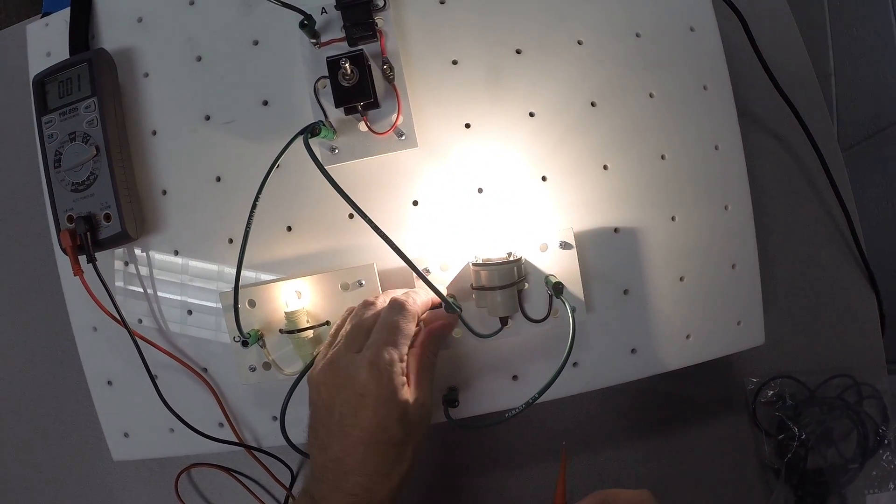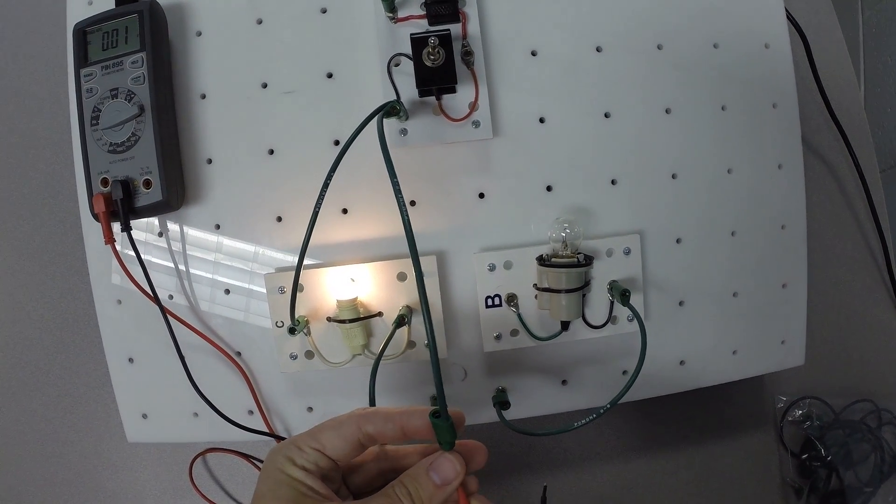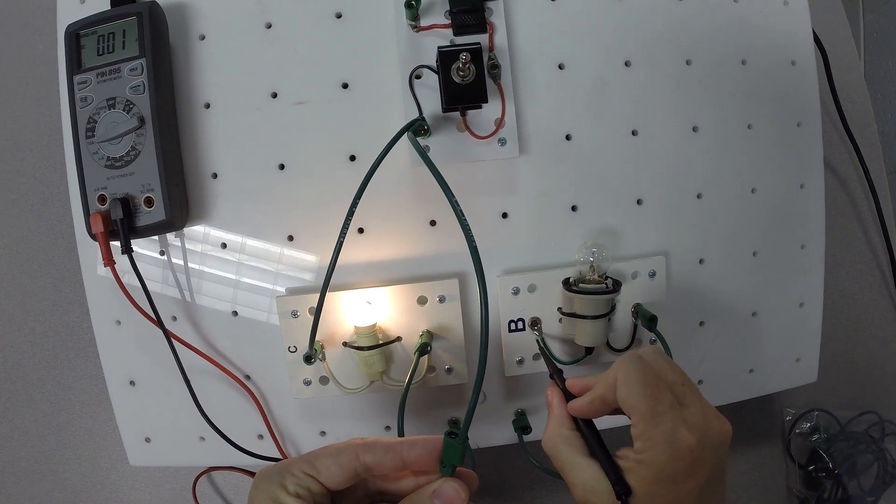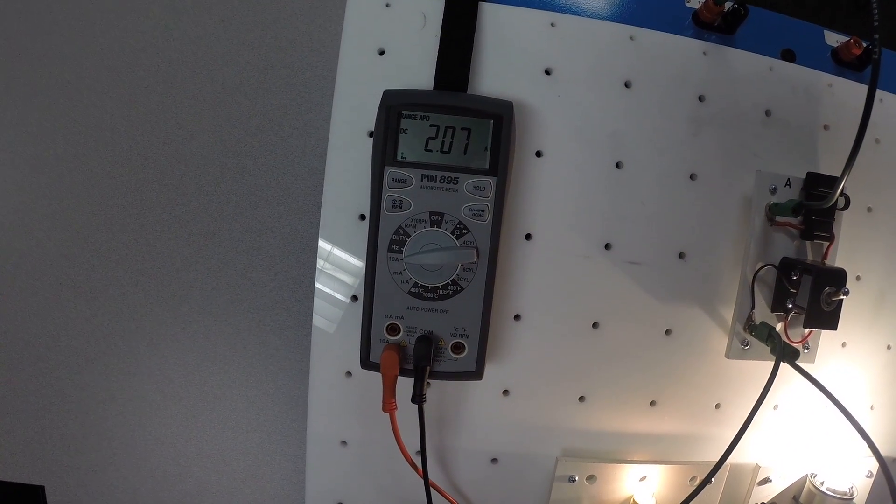Let's come over here to our other branch in our parallel circuit, and let's hook up our meter here. Over here through the bright bulb we have 2 amps.